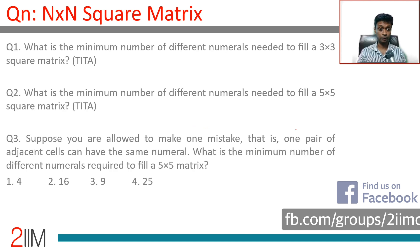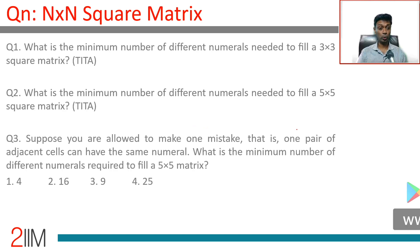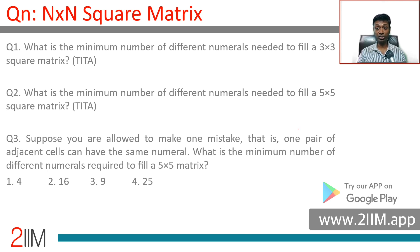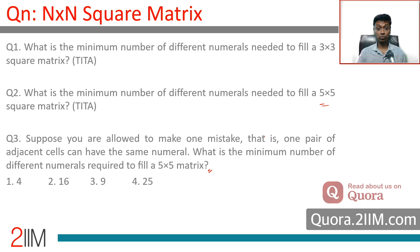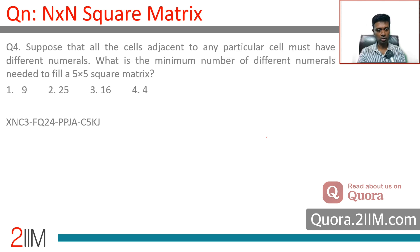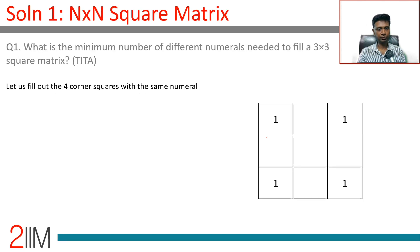The question asks: what is the minimum number of different numerals needed to fill a 3×3 square matrix? I'm going to fill numerals starting with 1, 2, 3, and so on. The best way to start is probably with the four corner cells.